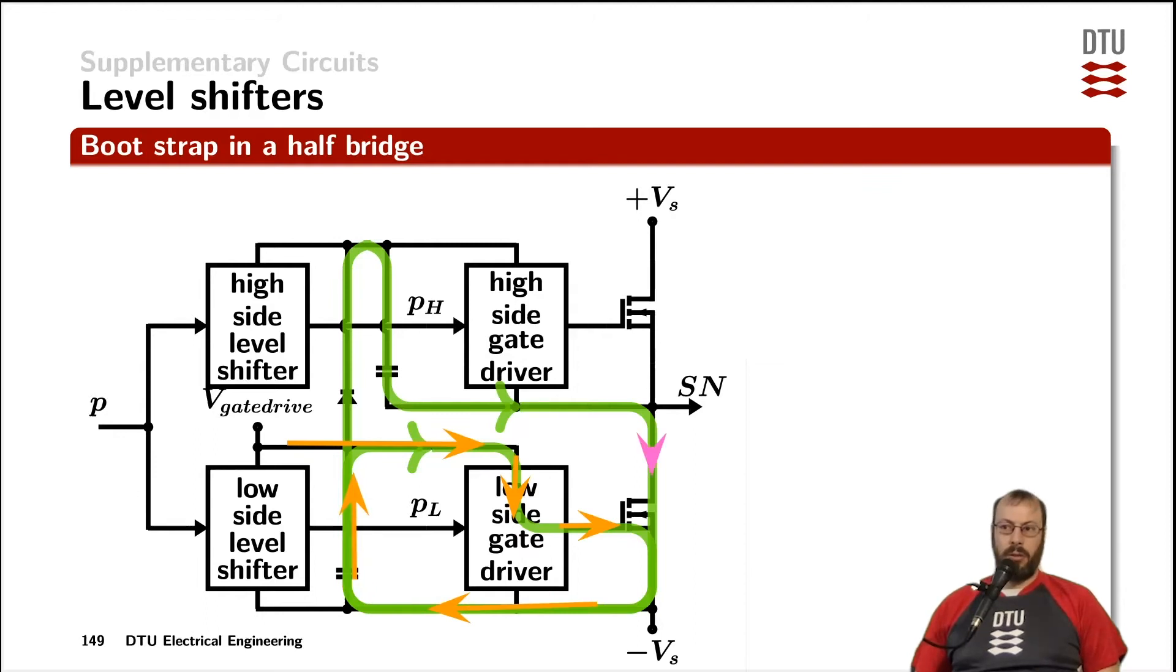That turns on the low side power MOSFET and the switch node is connected to the negative supply rail minus VS. That means furthermore, the lower end of that so-called bootstrap capacitor is also pulled to minus VS. Furthermore, that leads to the bootstrap diode to conduct and charge the bootstrap capacitor, which we then later on can use to drive the high side MOSFET.